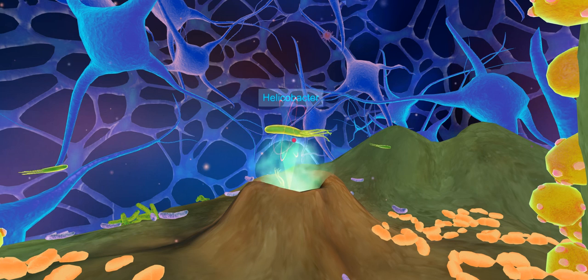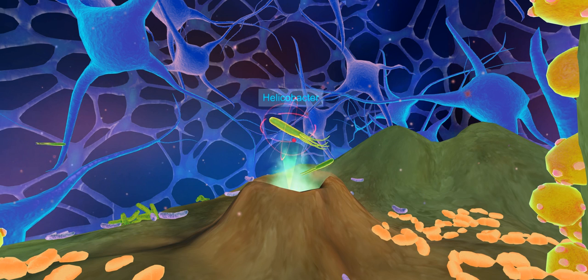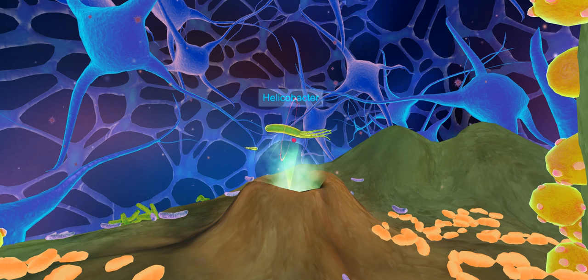Helicobacter pylori is a genus of helical shape, anaerobic bacteria, that requires critical living conditions. It's the only bacterium that can live in the acid environment of the human stomach.